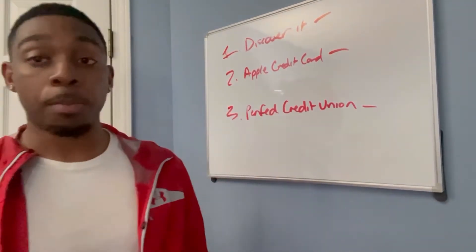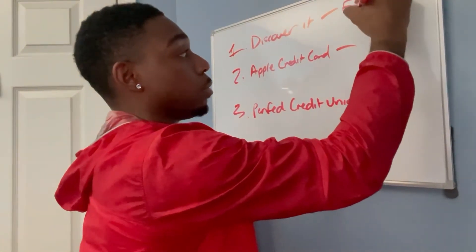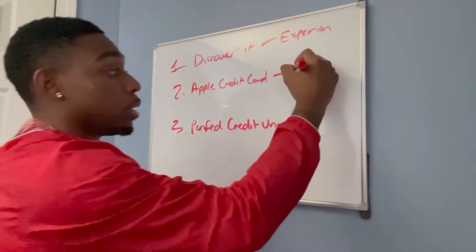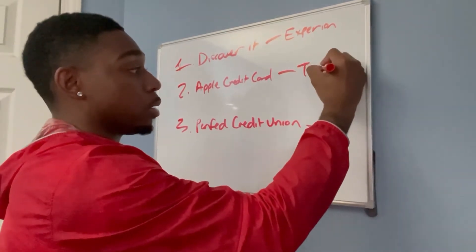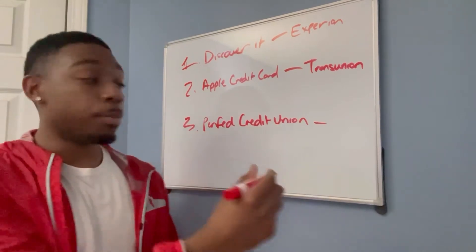So, I know that Discover it pulls from Experian. And I know that Apple pulls from TransUnion. And I know that PenFed pulls from Equifax.